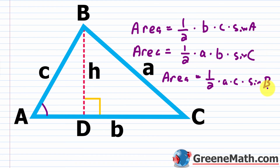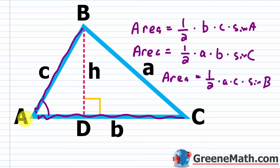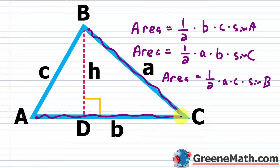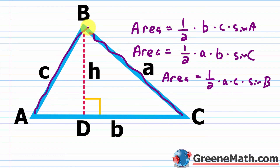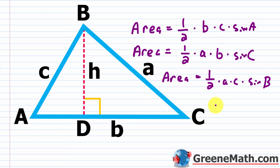Notice the pattern: the capital letter angle in the formula is always the one not represented by either lowercase side. If you have sides b and c, the angle between them is A. If you have sides a and b, the angle between them is C. If you have sides a and c, the angle between them is B. This formula is useful when you don't know the height H.